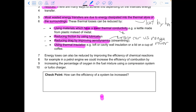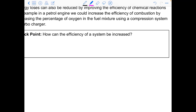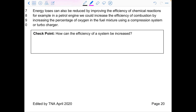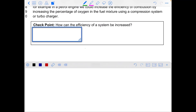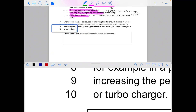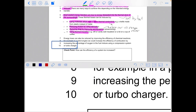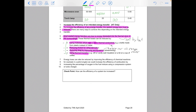How can the efficiency of a system be increased? Write the answer to this question in your book. The answer should include any of these four: use materials that have a lower thermal conductivity, reduce friction by lubrication, reduce drag by improving aerodynamics, or use thermal insulation.